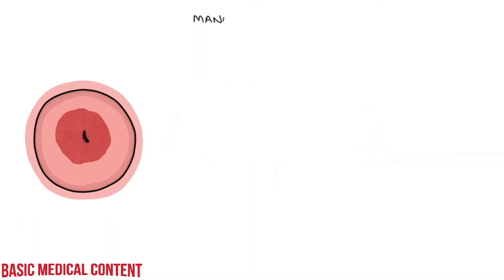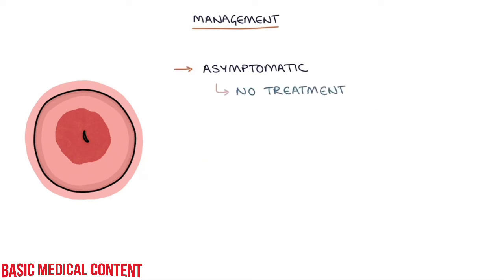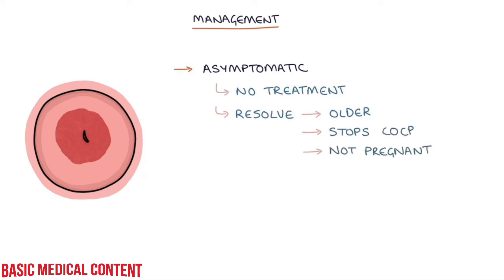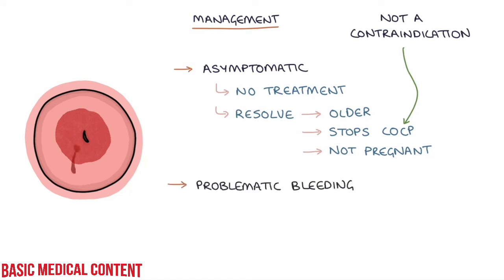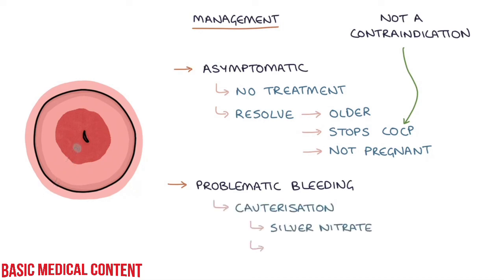Finally, let's talk about management. Asymptomatic ectropions require no treatment. Ectropion will typically resolve as the patient gets older, stops taking the combined pill, or is no longer pregnant. Having a cervical ectropion is not a contraindication to starting the combined contraceptive pill. Problematic bleeding is an indication for treatment, and treatment involves cauterization of the ectropion using silver nitrate or cold coagulation during colposcopy.